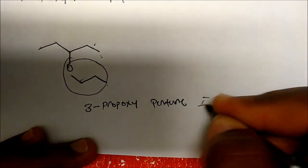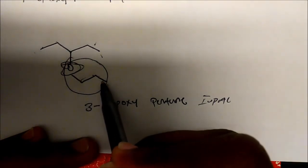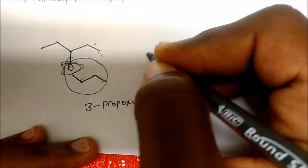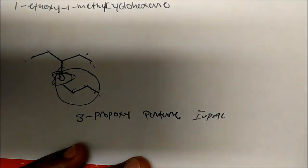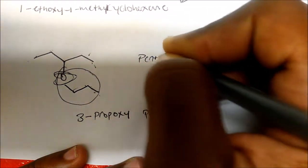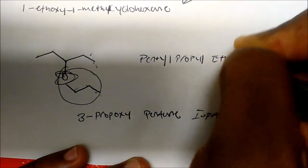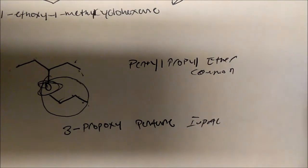For the common name of this compound, look at the substituents on either side of the oxygen. On one side you have one, two, three carbons — that's a propyl group. On the other side you have one, two, three, four, five carbons — that's a pentyl group. Since both start with P, we compare further: pentyl (P-E) versus propyl (P-R), so E wins alphabetically. The common name is pentyl propyl ether.